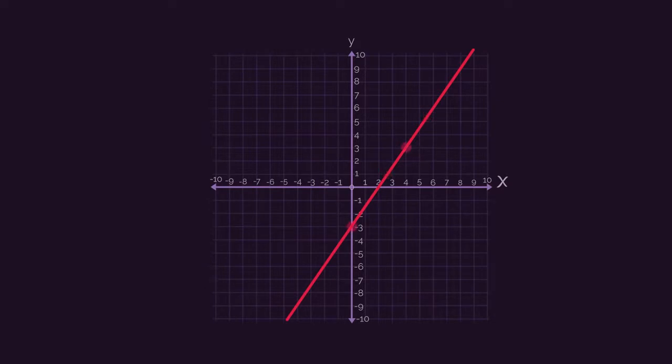With your two points, draw a triangle, and how much the triangle goes up the rise, which is 6, and how much the triangle goes along the run, which is 4.